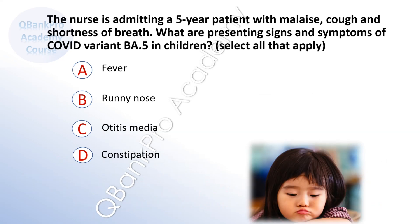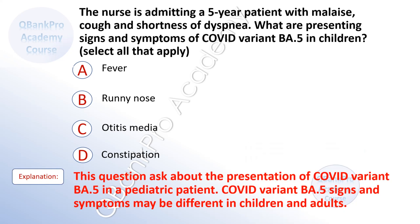The nurse is admitting a 5-year-old patient with malaise, cough, and shortness of breath. What are presenting signs and symptoms of COVID variant BA5 in children? Select all that apply. A. Fever. B. Runny nose. C. Otitis media. D. Constipation. The correct answers are A, fever, and B, runny nose. COVID variant BA5 signs and symptoms may be different in children and adults. Symptoms of the BA5 variant in children are similar to meningitis and include headache, neck pain, muscle and body aches, fatigue, fever, chills, cough, and difficulty breathing.